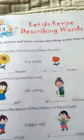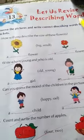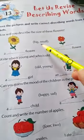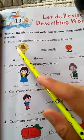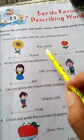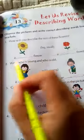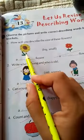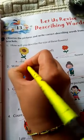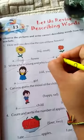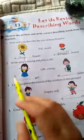Now come to lesson number 13. In the 13th again, let's revise the describing word. Do options diye gaye hain — you have to choose one and fill in the blanks. How will you describe the size of these flowers? In flowers ke size ko aap kaise describe karenge? A dash flower — it's big. A big flower. A dash flower — it's small. Small flower.